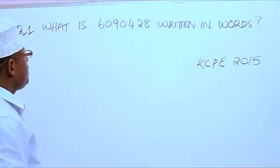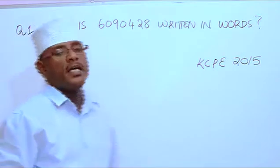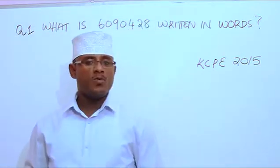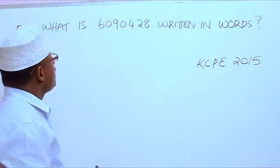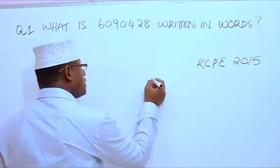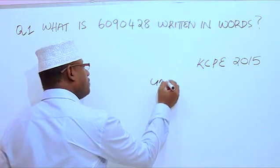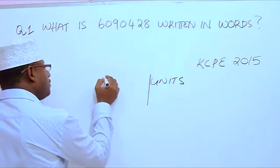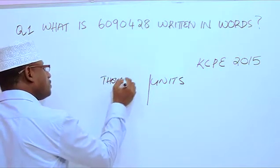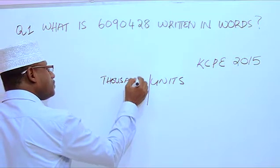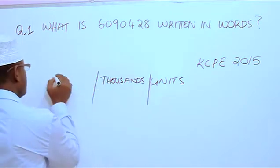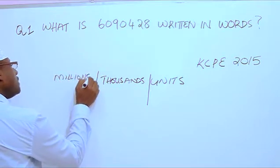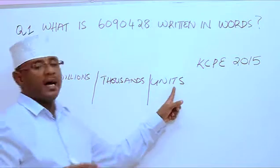What is 6,090,428 written in words? We're going to split our number into three parts: units, thousands, and millions. Under units we have ones,